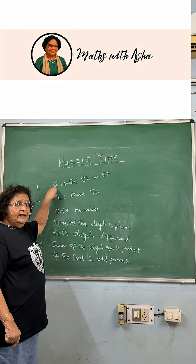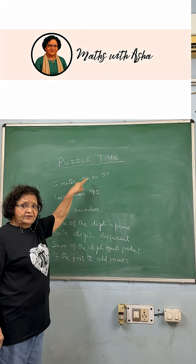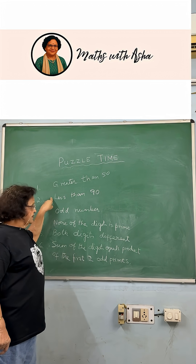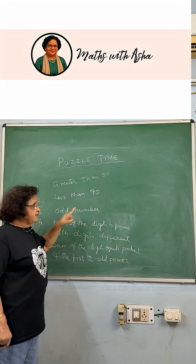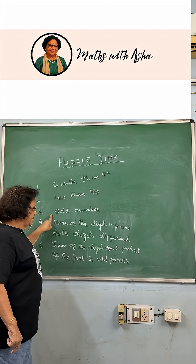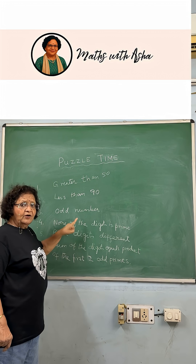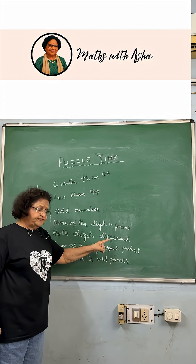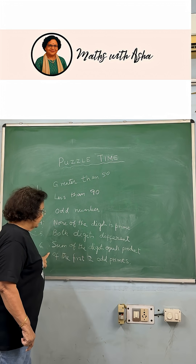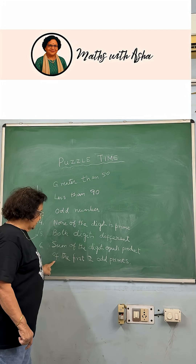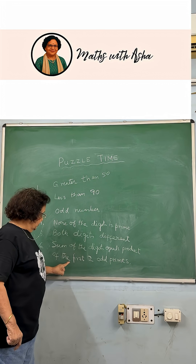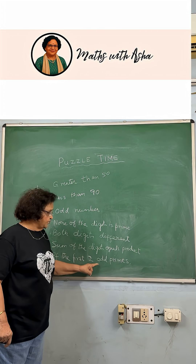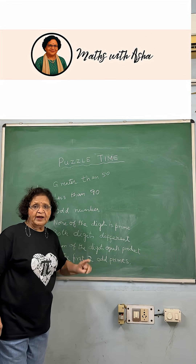It said that the house number is greater than 50 and it is less than 90. It is an odd number. None of the digits of the house number is prime. Both the digits are different.